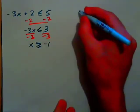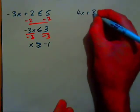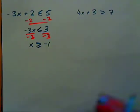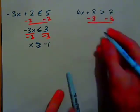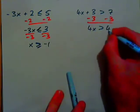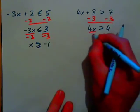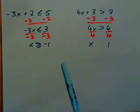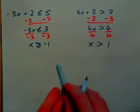Try 4x plus 3 is greater than 7. Subtract 3 from both sides: 4x is greater than 4. The inequality stays the same direction when subtracting. Now divide by positive 4: x is greater than 1. When you divide by a positive number, the inequality sign stays in the same direction.